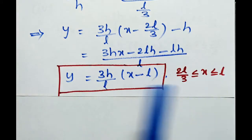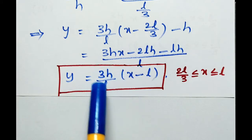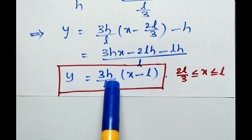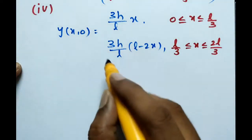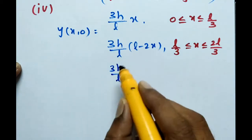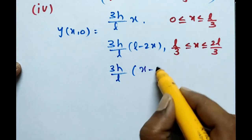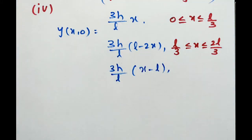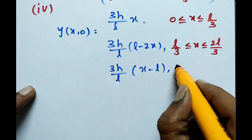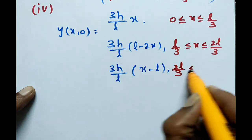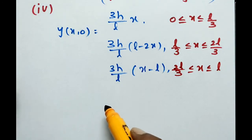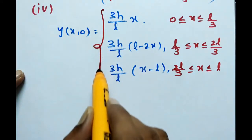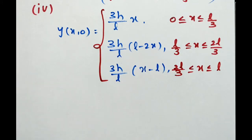In between 2L by 3 and L, the initial displacement at time t equal to 0 at any point x is 3H by L into x minus L, for 2L by 3 less than or equal to x less than or equal to L. This is condition number 4, the initial displacement in the string at time t equal to 0 at any point x.